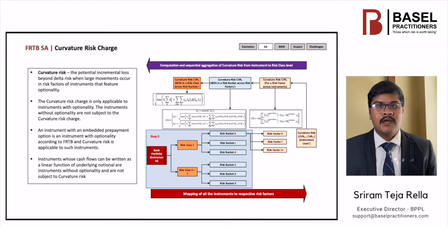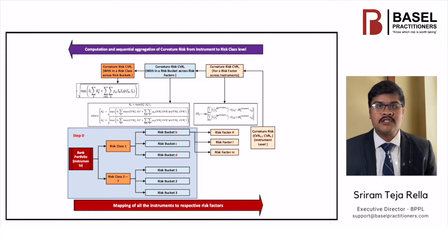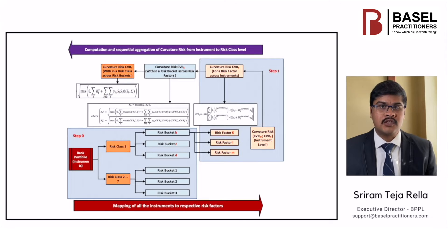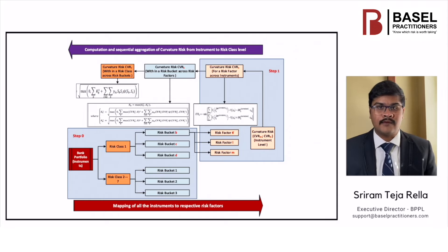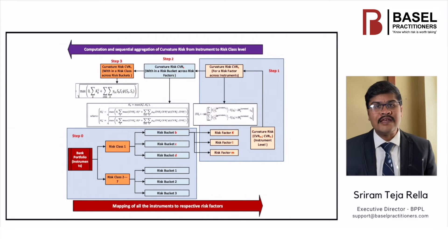Now let us see the curvature risk. The computational approach for non-linear risks can be divided into three calculation steps. The curvature risk measure represents the incremental risk not captured by the delta risk of price changes in the value of an option. Step 0: Mapping of instruments to risk classes and buckets, which we have already done. Step 1: Finding the net curvature risk charge — the CVR(k) — across instruments for a risk factor, starting at instrument level and then netting at the risk factor level. Step 2: Aggregation of curvature risk exposure within each bucket using the corresponding prescribed correlation. Step 3: Aggregation of curvature risk positions across buckets within each risk class.